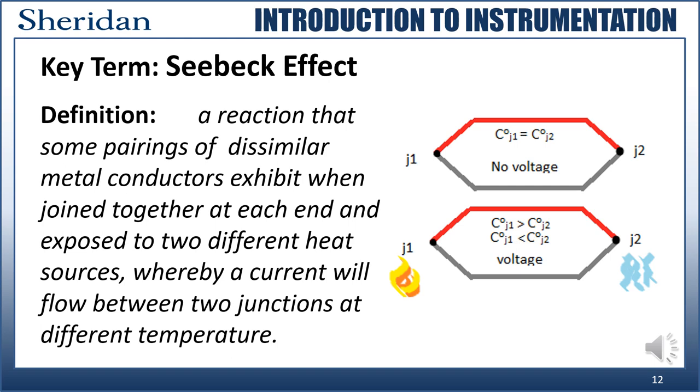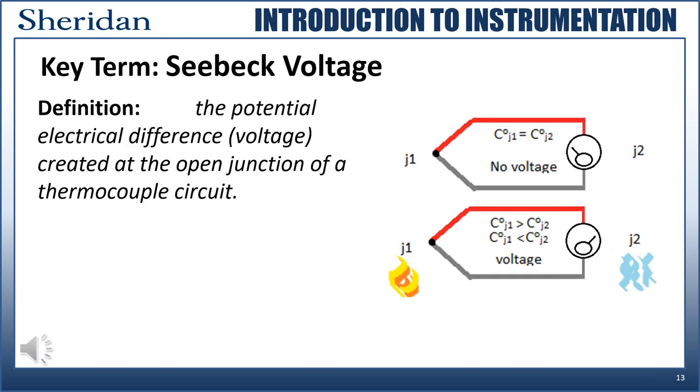The Seebeck effect is the reaction that some dissimilar metals will exhibit when joined together at each end and exposed to two different heat sources, whereby a current will flow between the two junctions at different temperatures. The voltage created by the Seebeck effect is called the Seebeck voltage. The Seebeck voltage is proportional to the difference in temperature between the two joints.